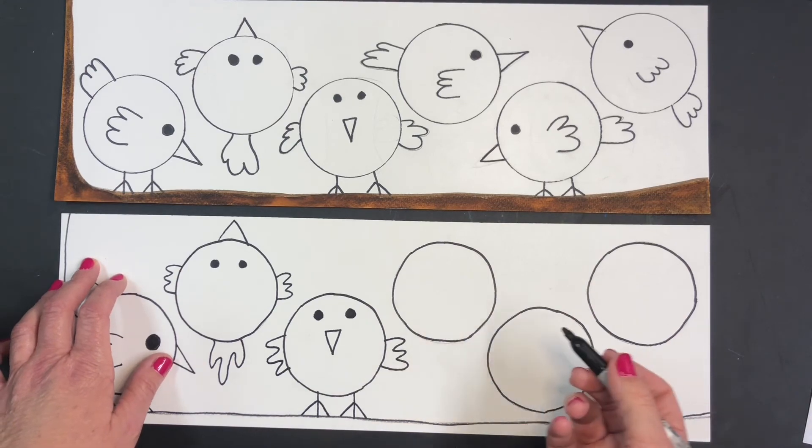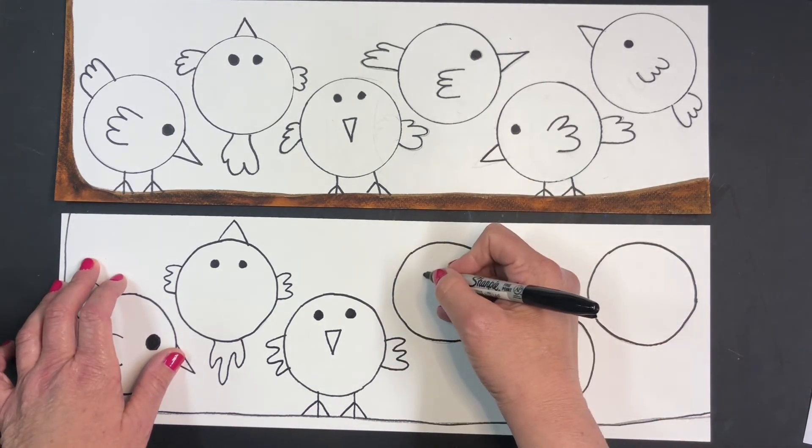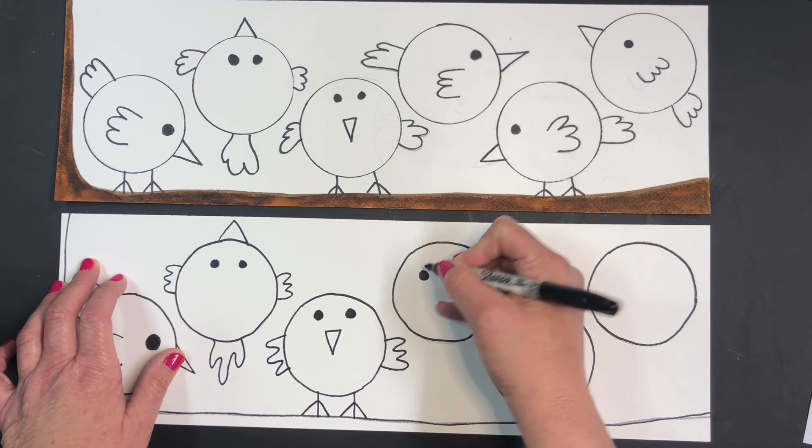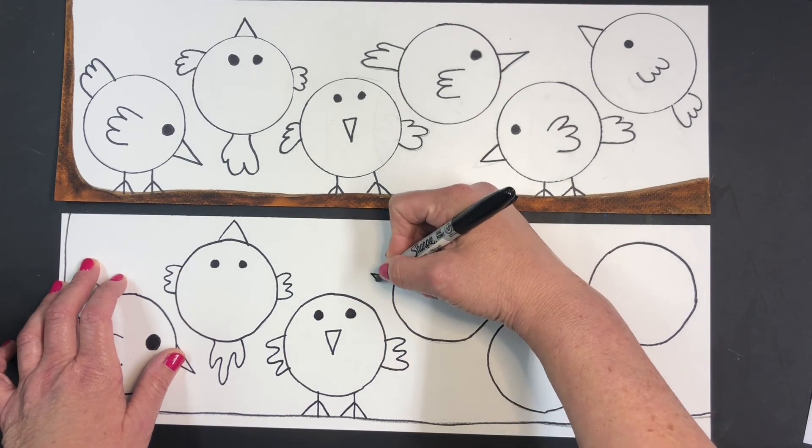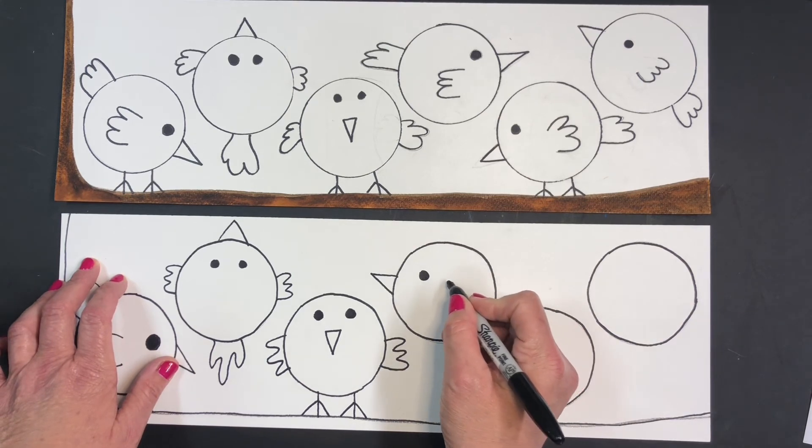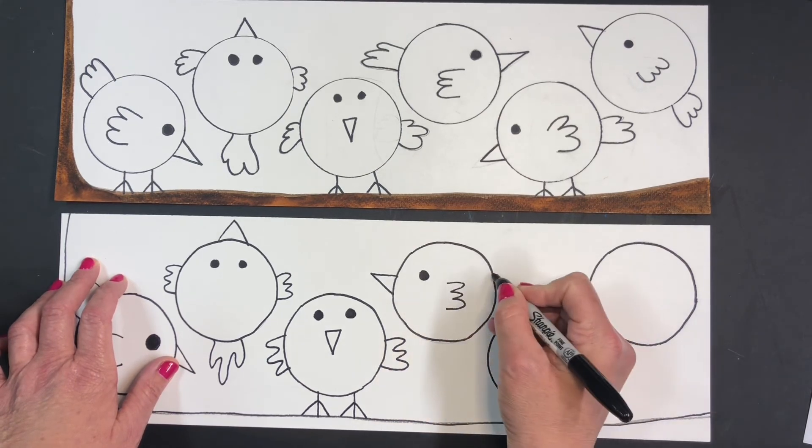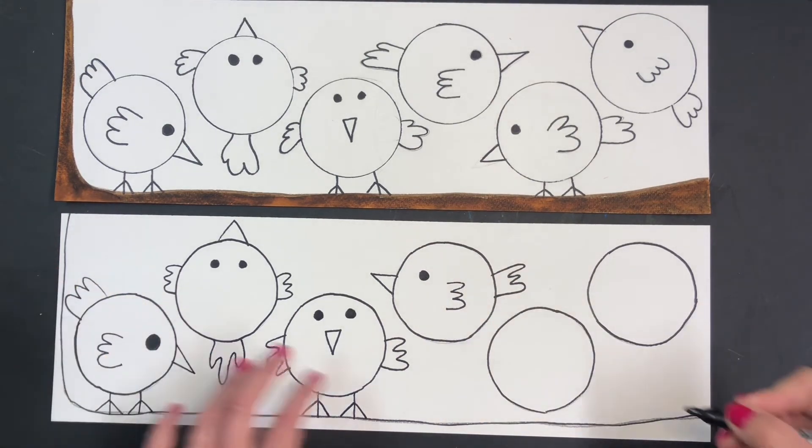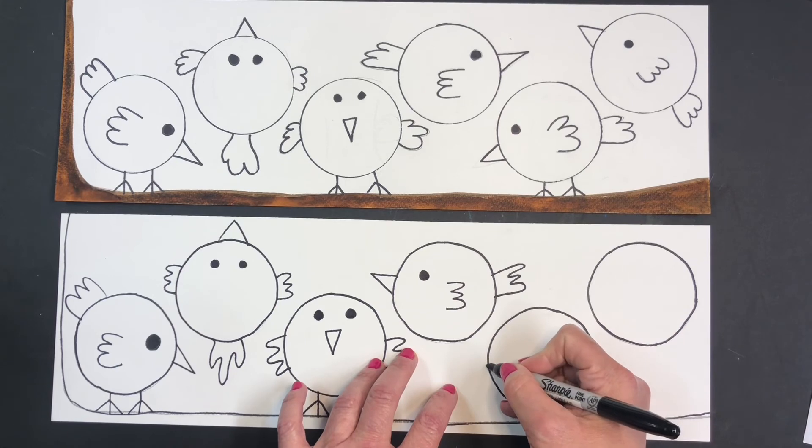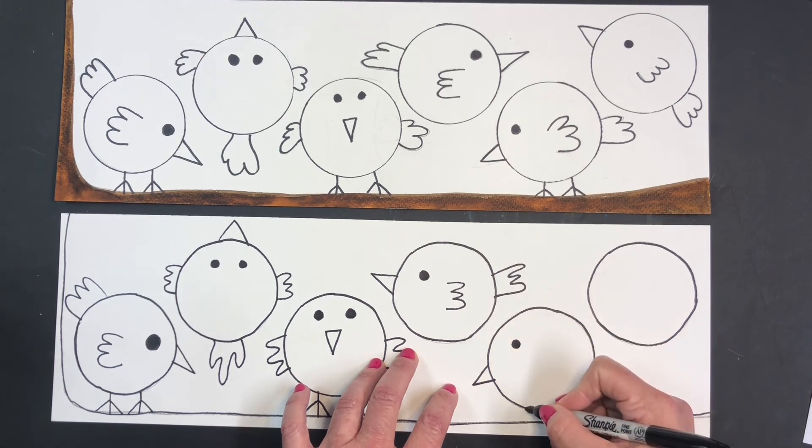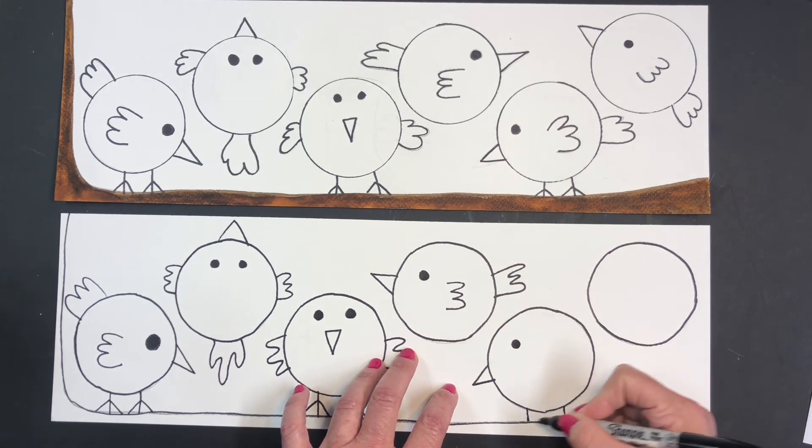And like, so here, you know, maybe I'll have this bird going this way. And again, you should look at the pictures to see which way your bird is going to be flying. And maybe I'll still have this bird going down. It's all just drawing triangles, circles, lines, and wings.